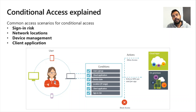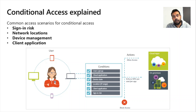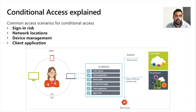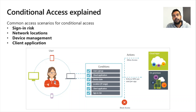We can also assess network location — based on the user's usual location we can define certain locations as trusted. Whenever a user logs in from somewhere else, we can detect and treat that as a suspicious location. Using device management, we can control what type of device users want to use — iOS, Android, or Windows — and what versions to support. We can also restrict by client application, for example allowing only Microsoft Teams when outside the office.